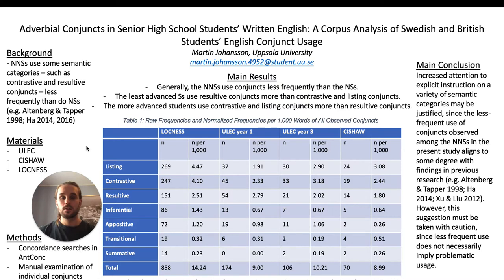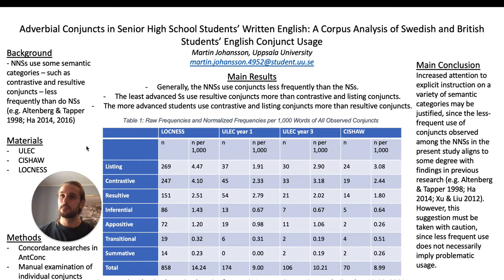The ULIC sample that I used is a collection of short essays about the existence of ghosts, and CHESHA is a self-compiled corpus that consists of short essays about the use of technology in today's society.